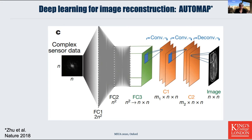We adopted a method by Zhu et al., published in Nature in 2018, which does such an approach. It's a 2D convolutional neural network that takes as input the complex image data, has k-space with fully connected layers making computation quite complex, does convolution layers and finally deconvolution. Basically, this network is learning, in the ideal case, the inverse Fourier transform to go from the frequency domain to the spatial domain. It was designed for under-sampled data.